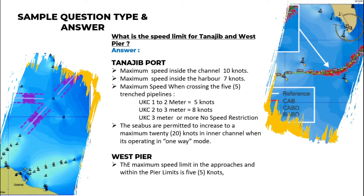What is the speed limit for Tanajib and Westpere? For Tanajib, the maximum speed inside the channel is 10 knots, maximum speed inside the harbor is 7 knots, and maximum speed when crossing the five transpect line where UKC is 1 to 2 meters is 5 knots, UKC 2 to 3 meters is 8 knots, and if UKC is 3 meters or more there is no speed restriction.